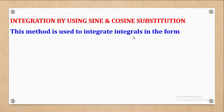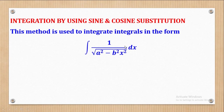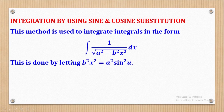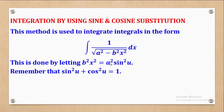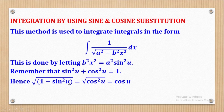This method is used to integrate integrals in the form 1 over square root of (a² − b²x²) dx, where a and b are constants and x is a variable. Whenever the denominator has a square root of a constant minus a variable x, it's better to use sine or cosine substitution. This is done by letting b²x² equal a² sin²(u), so the whole expression under the root becomes a²(1 − sin²(u)) = a² cos²(u), giving cos(u), using the identity sin²(u) + cos²(u) = 1.